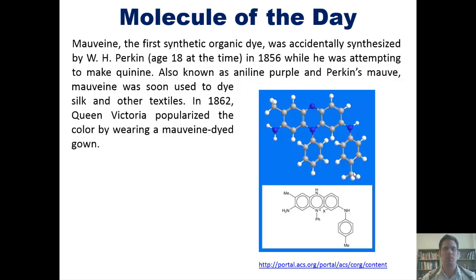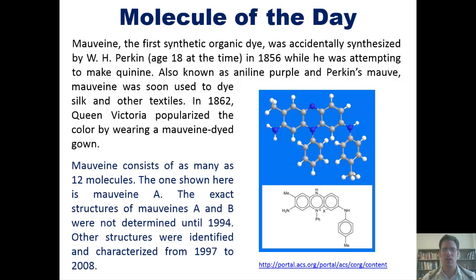In 1862, Queen Victoria popularized the color by wearing a Mauveine-dyed gown. Mauveine consists of as many as 12 molecules; the one shown here is Mauveine A. The exact structures of Mauveine's A and B were not determined until 1994. Other structures were identified and characterized from 1997 to 2008.